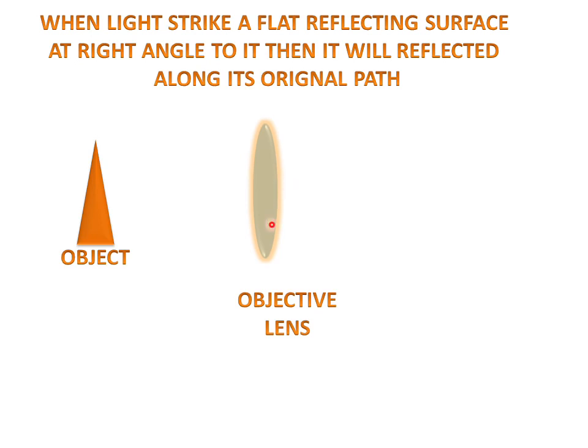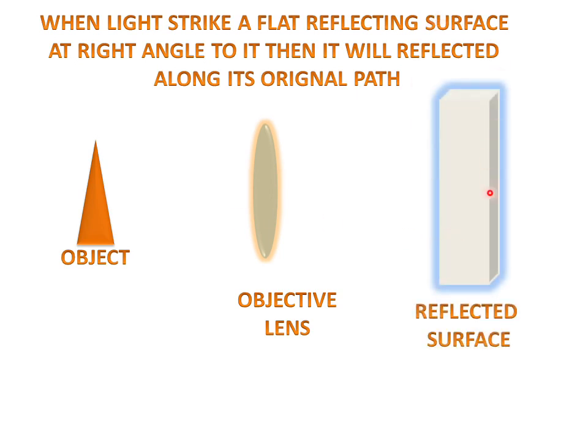We have an objective lens which is close to the object. This is a reflected surface.